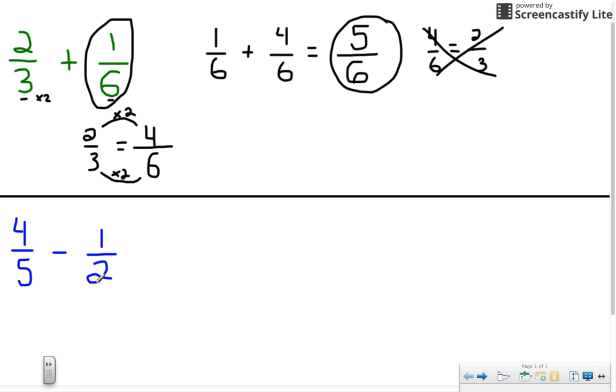So down here I have four-fifths minus one-half. Now again, unlike denominators—two and five are different numbers—but I'm still going to do the same process. Two is the smallest. Does anything times two equal five? No, because two times two is four and two times three is six. I can't land on five. So that means that both of these numbers have to change.